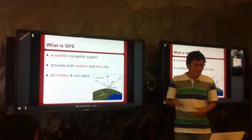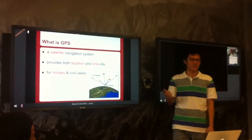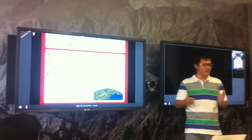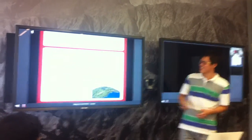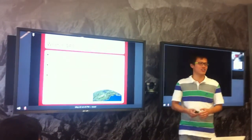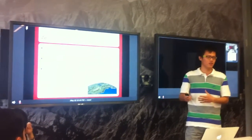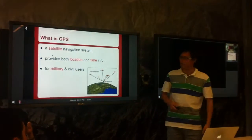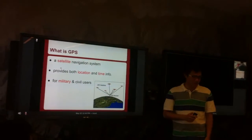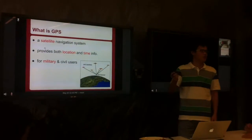So what is GPS? GPS is a satellite navigation system. It provides location and time information for GPS receivers or GPS chips. Both time and location. And it is for military and civil uses, both.